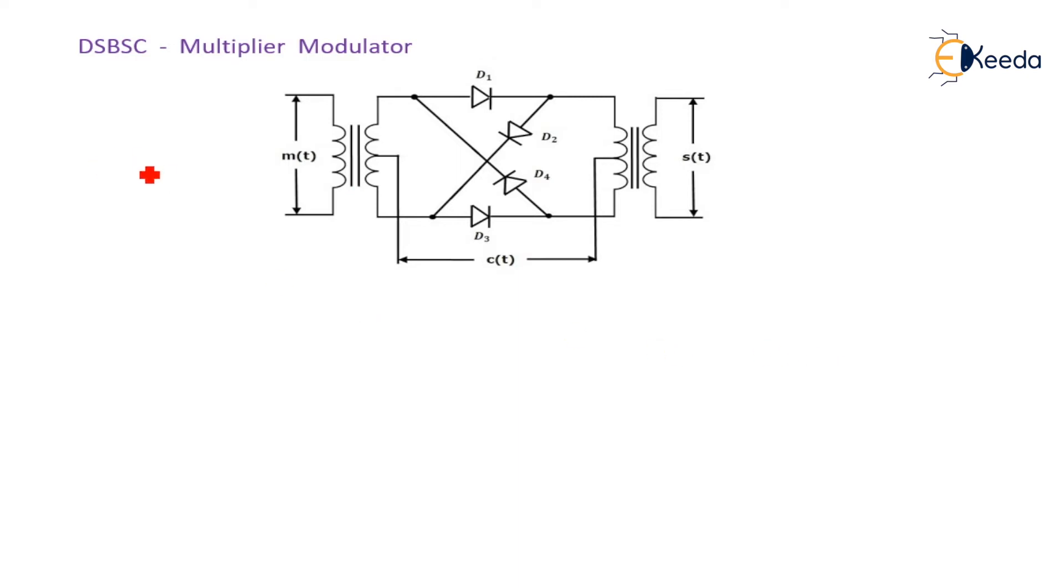Here, M of t is nothing but the modulating signal. It is applied. Here, carrier signal is applied.